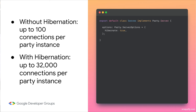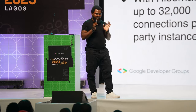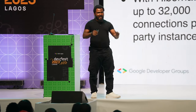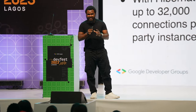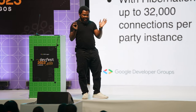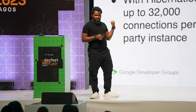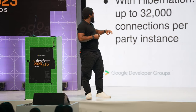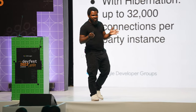There is something you can configure when deploying a PartyKit app called Hibernation. With Hibernation, your app can scale up to 32,000 connections per party instance, meaning you can have 32,000 clients literally connected to that server. The moment you have more than 32,000 clients, everything breaks. But as long as you have fewer than 32,000 connections, this is going to scale. If you don't use Hibernation, the max you can do is 100, so it would be more of a toy app.